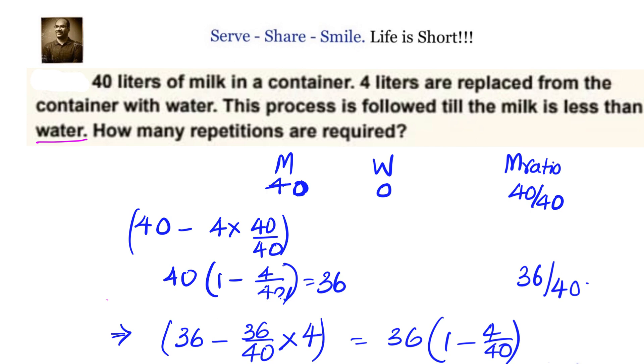If you understand now, try to write this one by one. After first, what you got is 40 into (1 - 4/40). After second, what you got is 40 into (1 - 4/40) whole square.